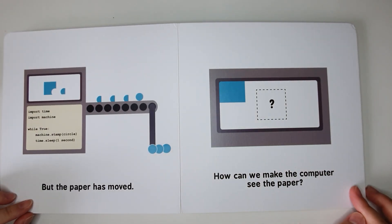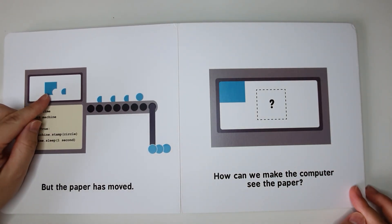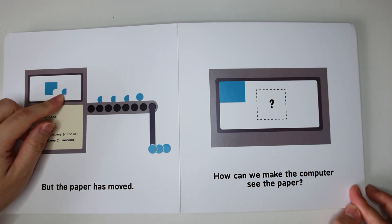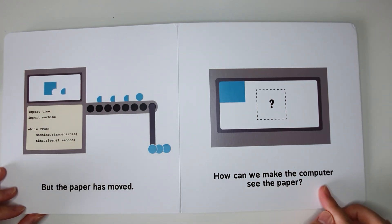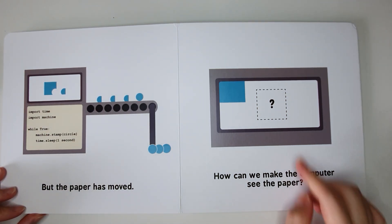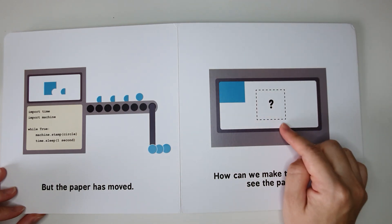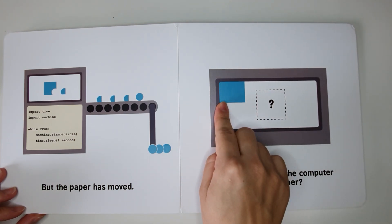But the paper has moved. And this is the spot where the machine will cut the paper. So we will end up with quarter circles or semi-circles instead. How can we make the computer see the paper? This is where the machine will cut the paper, but this is where the paper has moved to.